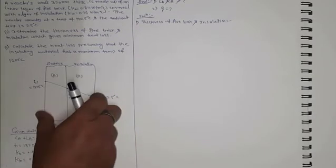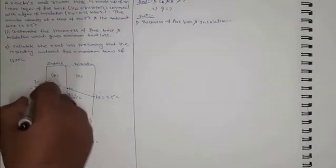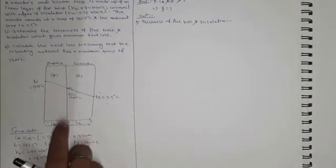A composite wall is given, made up of fire brick as well as insulation. The total thickness of the wall is 320mm — basically it is a reactor wall. The inside temperature of the reactor wall is 1325°C and the ambient temperature is 25°C. The thermal conductivity of fire brick is 0.84 W/m°C and the thermal conductivity of insulation is 0.16 W/m°C. We have to calculate the thickness of fire brick and insulating material, and also the heat loss presuming maximum insulation temperature of 1200°C.